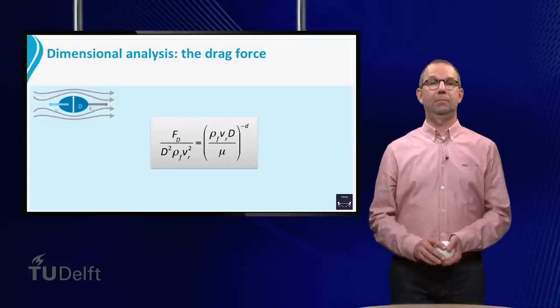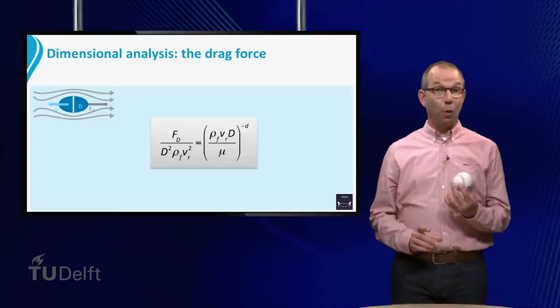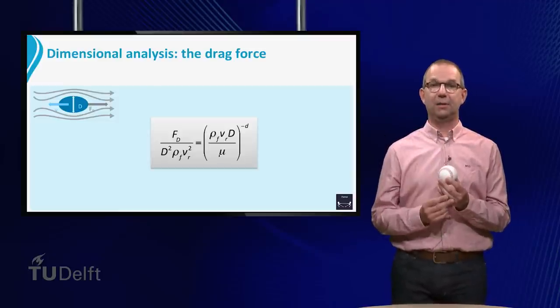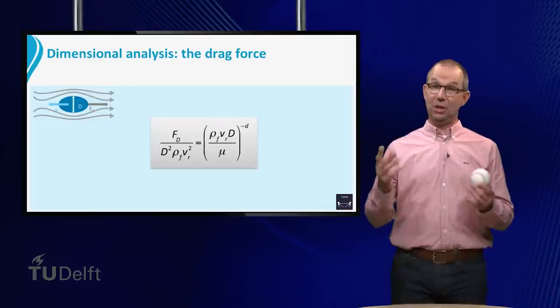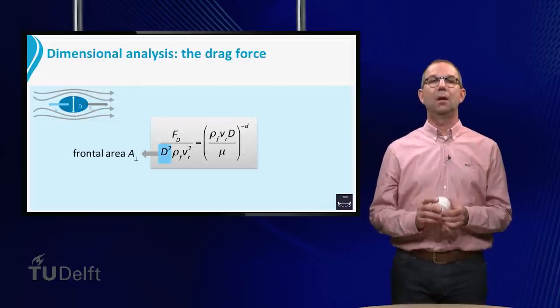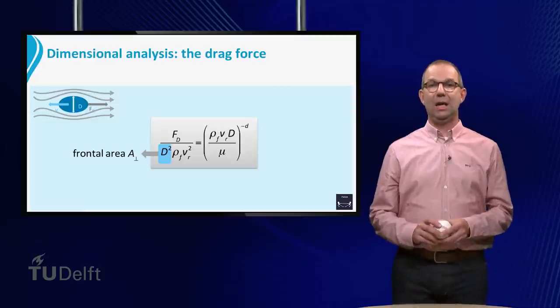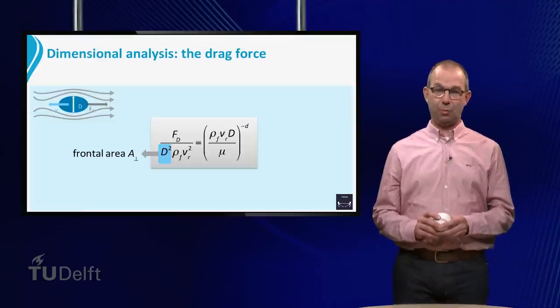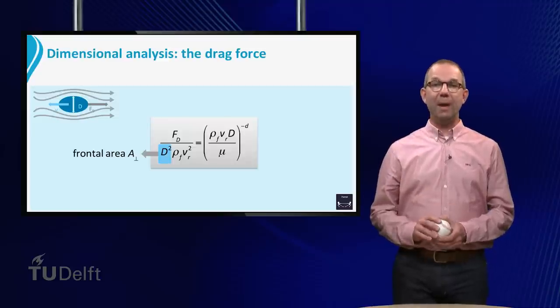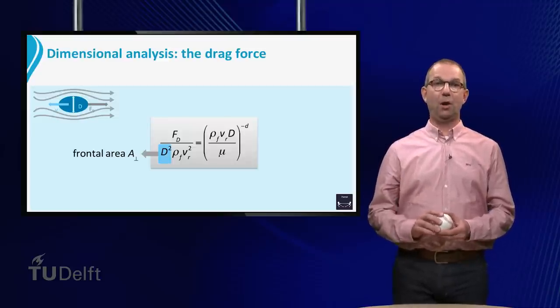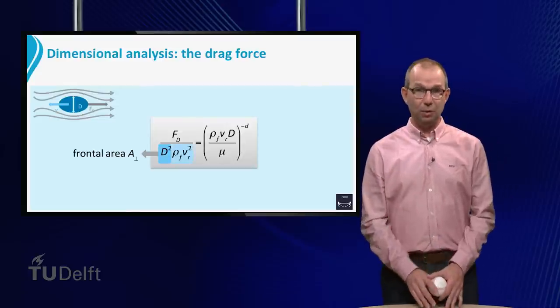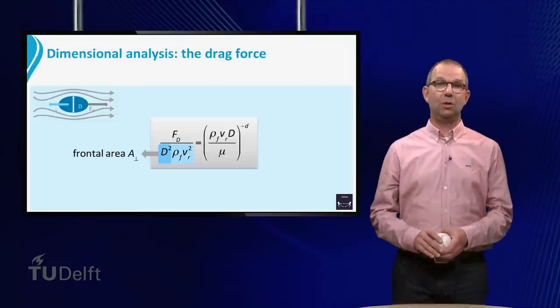Yes we can. We argued that the drag force is probably proportional to the frontal area of the object. That is reflected in D squared. It is a measure of the frontal area. We will write this as capital A with a subscript denoting perpendicular. The remaining part is rho F Vr squared. What does that mean? If we look at the units, it has units of a pressure.